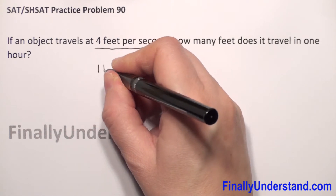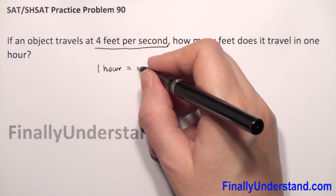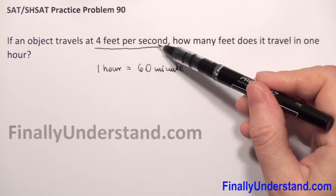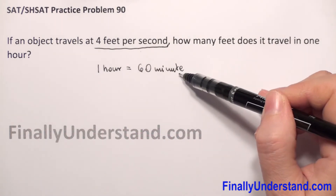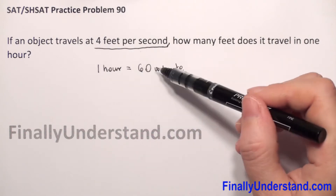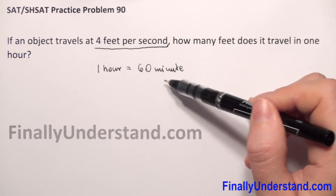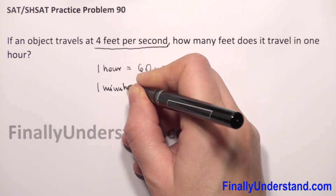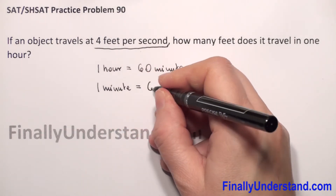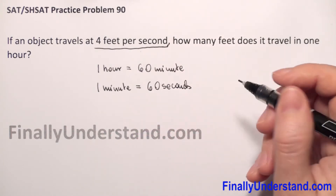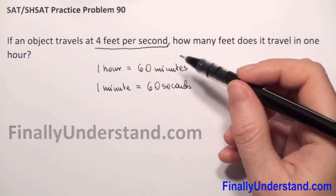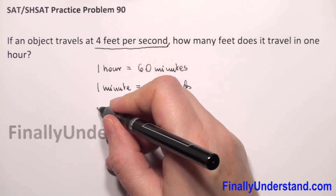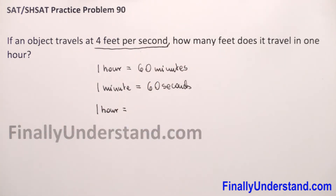We know that one hour has 60 minutes. Because we have seconds here, we will change our hour to seconds. We have one hour is 60 minutes.